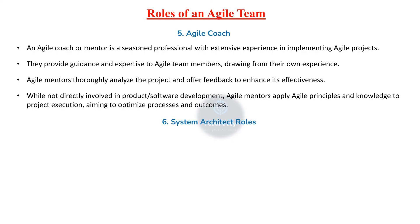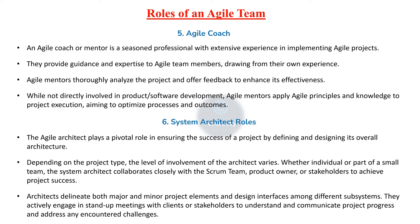The sixth is the System Architect role. The Agile Architect plays a pivotal role in ensuring the success of a project by defining and designing its overall architecture. Depending on the project type, the level of involvement of the architect varies. Whether individual or part of a small team, the system architect collaborates closely with the scrum team, product owner or stakeholder to achieve project success. Architects delineate both major and minor project elements and design interfaces among different subsystems. They actively engage in stand-up meetings with clients or stakeholders to understand and communicate project progress and address any encountered challenges.